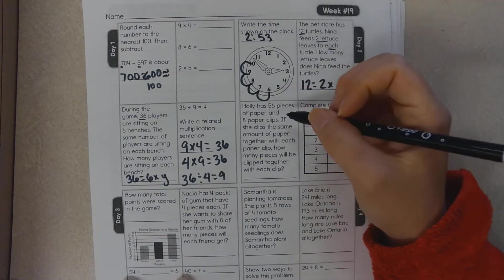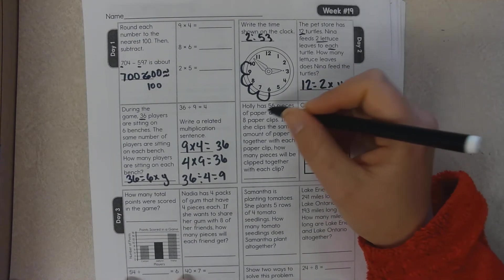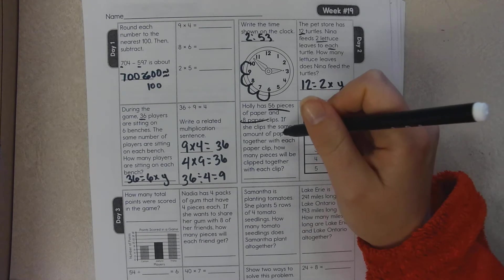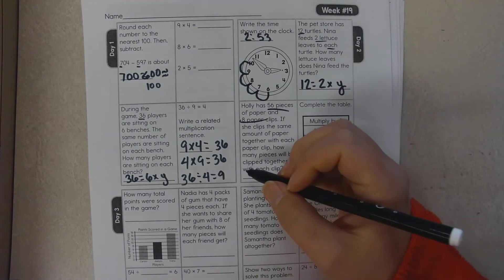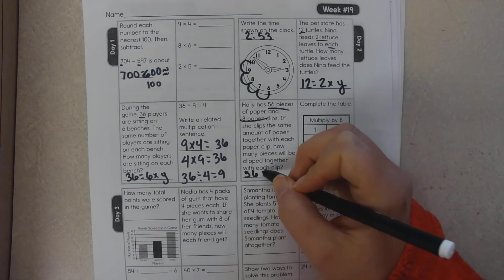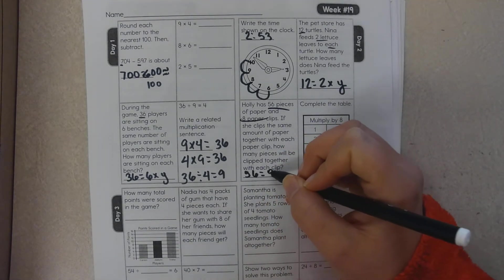Holly has 56 pieces of paper and eight paper clips. If she clips the same amount of paper together with each paper clip, how many pieces will be clipped together? So she has 56 and she's going to use eight paper clips with the equal number. How many times does eight go into 56? You can draw an array.